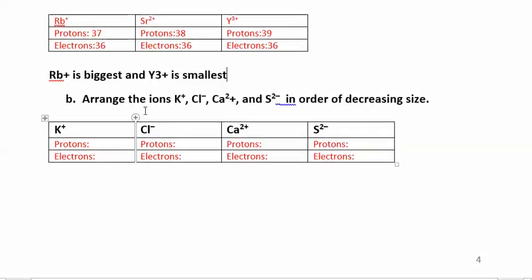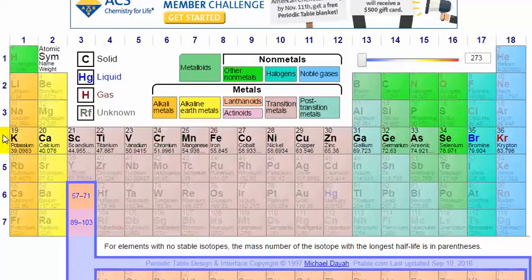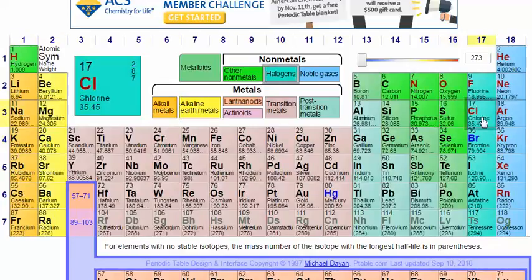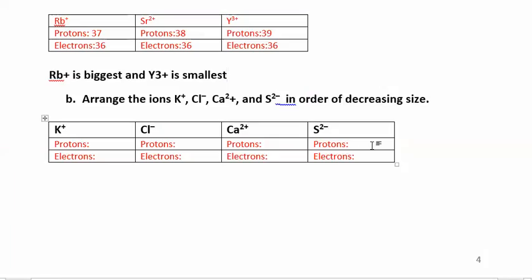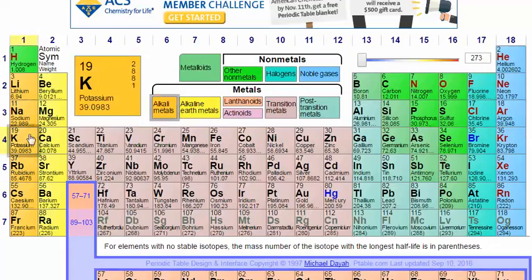Let's try another one: arrange the following atoms in order of decreasing size. We're looking at potassium, chlorine, calcium, and sulfur. Sulfur has 16 protons, chlorine has 17, potassium is 19, and calcium is 20.